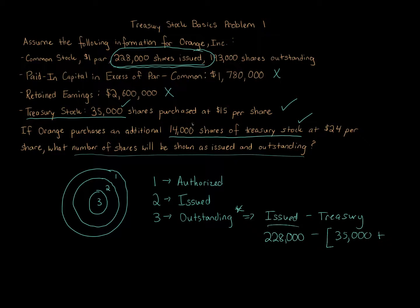Plus the 14,000 additional treasury stock that were purchased by the corporation. If we calculate them out, we get our outstanding shares. So 228,000 minus 35,000 minus 14,000—that's going to give us 179,000 shares of outstanding stock. It's the number of shares outstanding.